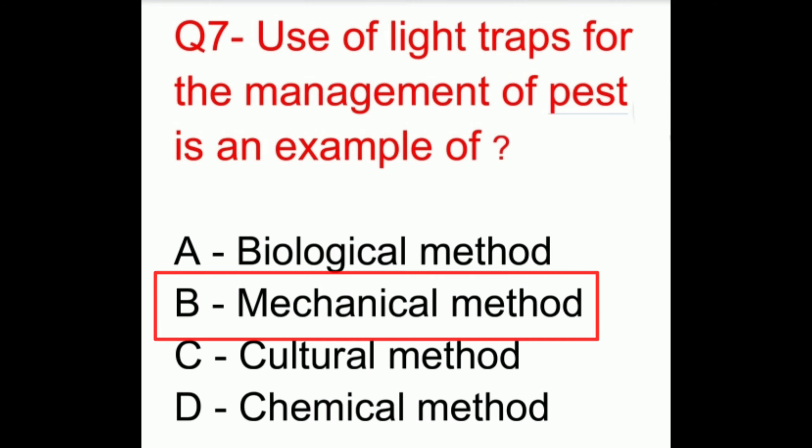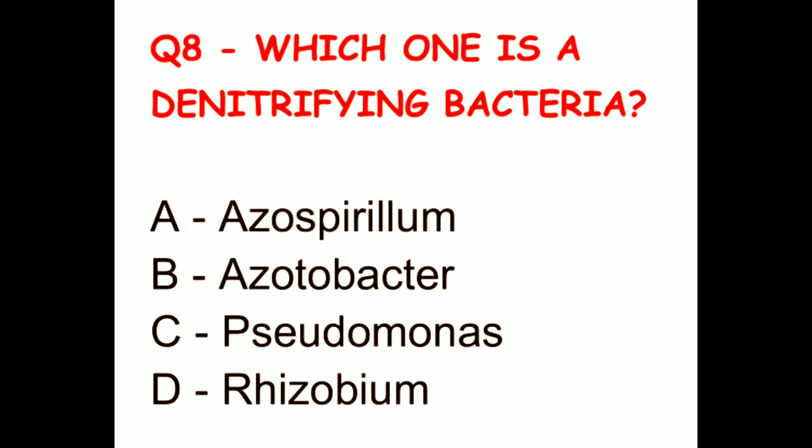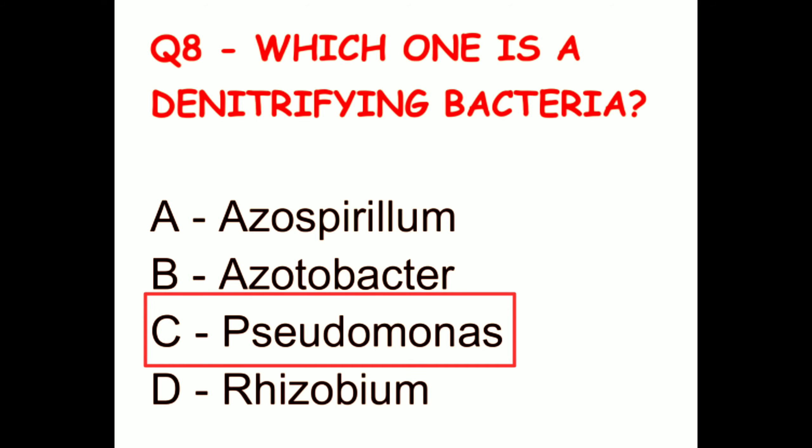Question 8. Which one is a denitrifying bacteria? The options are Azospirillum, Azotobacter, Pseudomonas, or Rhizobium. The correct answer is Pseudomonas.